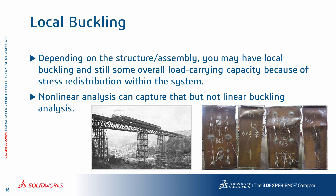Depending on your design, its complexity, and the number of structural members or parts, you may have local buckling in a member or multiple members and still have some load-carrying capacity left in the system. This bridge structure with many beam and truss members is a good example. Even if some members buckle, thanks to stress redistribution, it may not endanger the total integrity of the system and lead to catastrophic failure, giving some time for maintenance work. Nonlinear analysis can capture such stress redistribution behaviors, but not linear buckling analysis. What you certainly want to avoid is for an important structure to fail due to a sudden buckling of a primary member with no warning leading to complete failure.